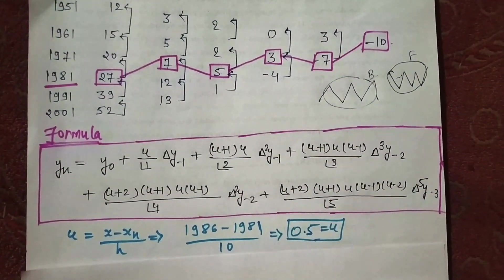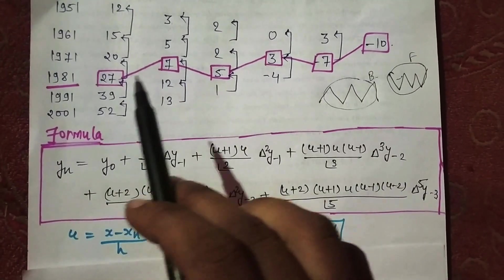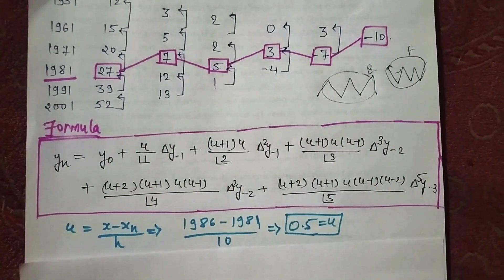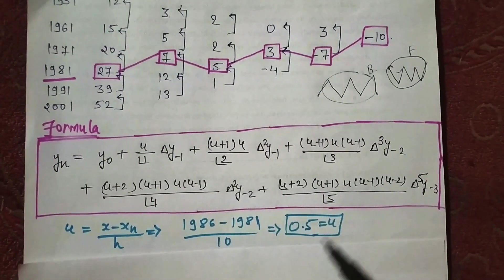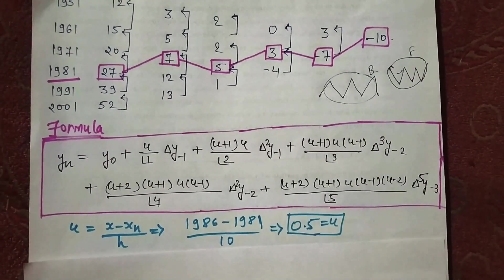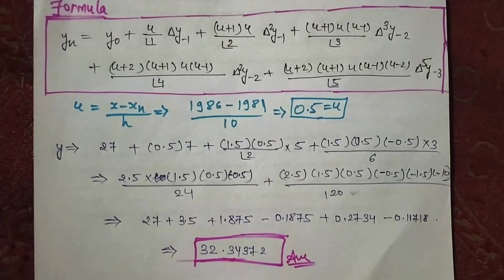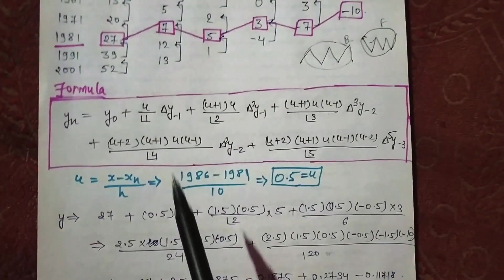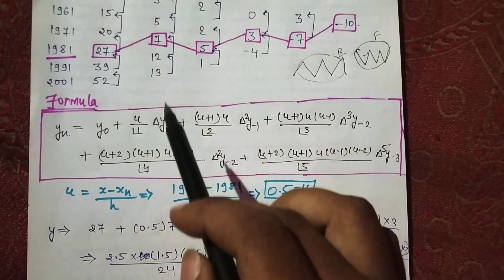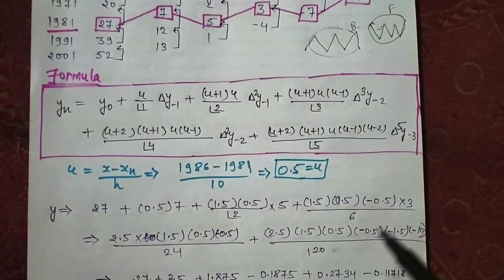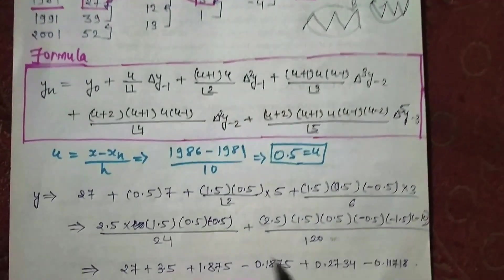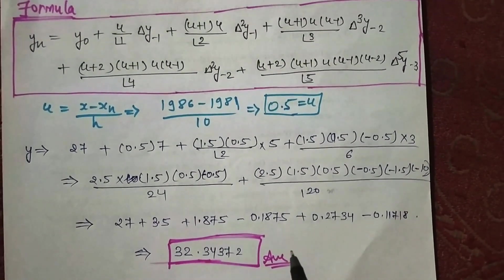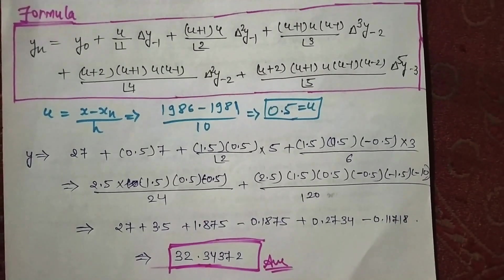We have all the values. These are the values in our table squares, and this is u. We have to put all the values down into the formula and solve it. See what I have marked — the values in our table. I have identified them one by one: here for y₀, here for Δy₀, here for another Δy₀ term, then for Δy₋₁.